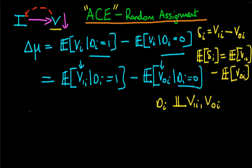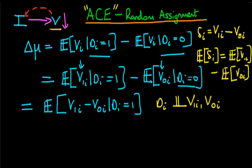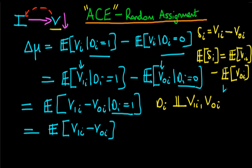So I can change the second expectation to also be conditional on DI equal to 1. When I do that, since both terms are conditioned on the same level of DI, I can combine them into a single expectation: the expectation of V1I minus V0I given DI equal to 1. And because DI is completely independent of V1I and V0I, this expectation doesn't need to be conditional on anything — it is the unconditional expectation of V1I minus V0I, which is exactly the average causal effect, by the linearity of the expectations operator.